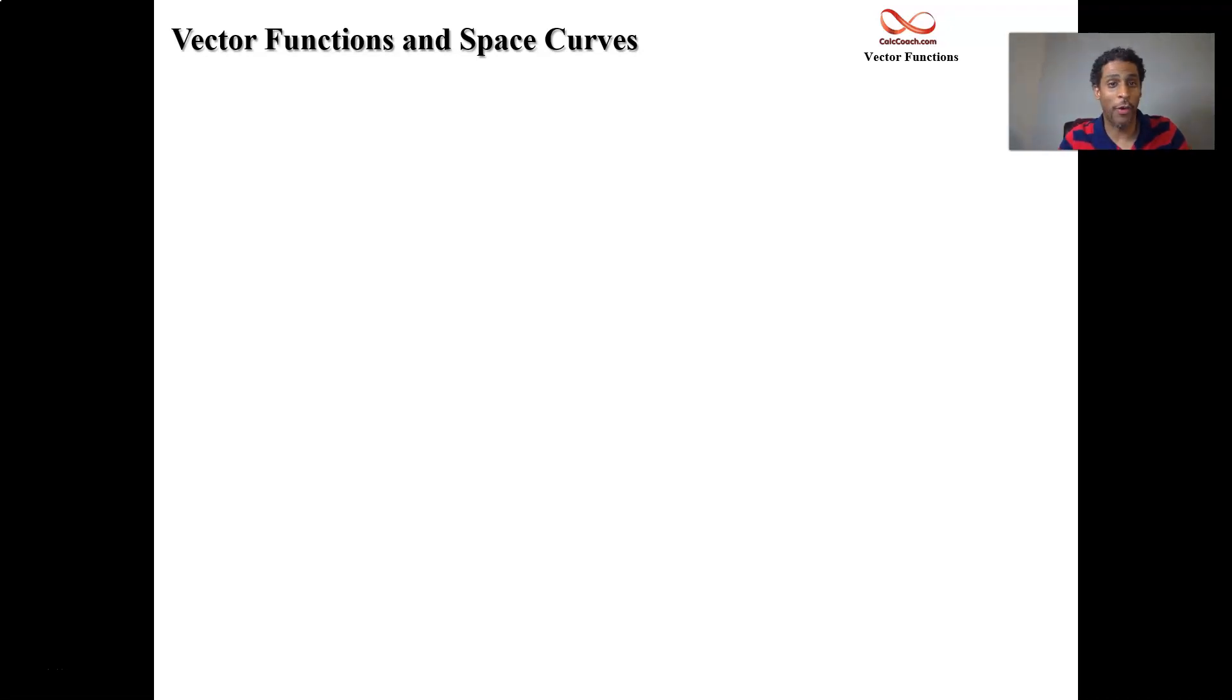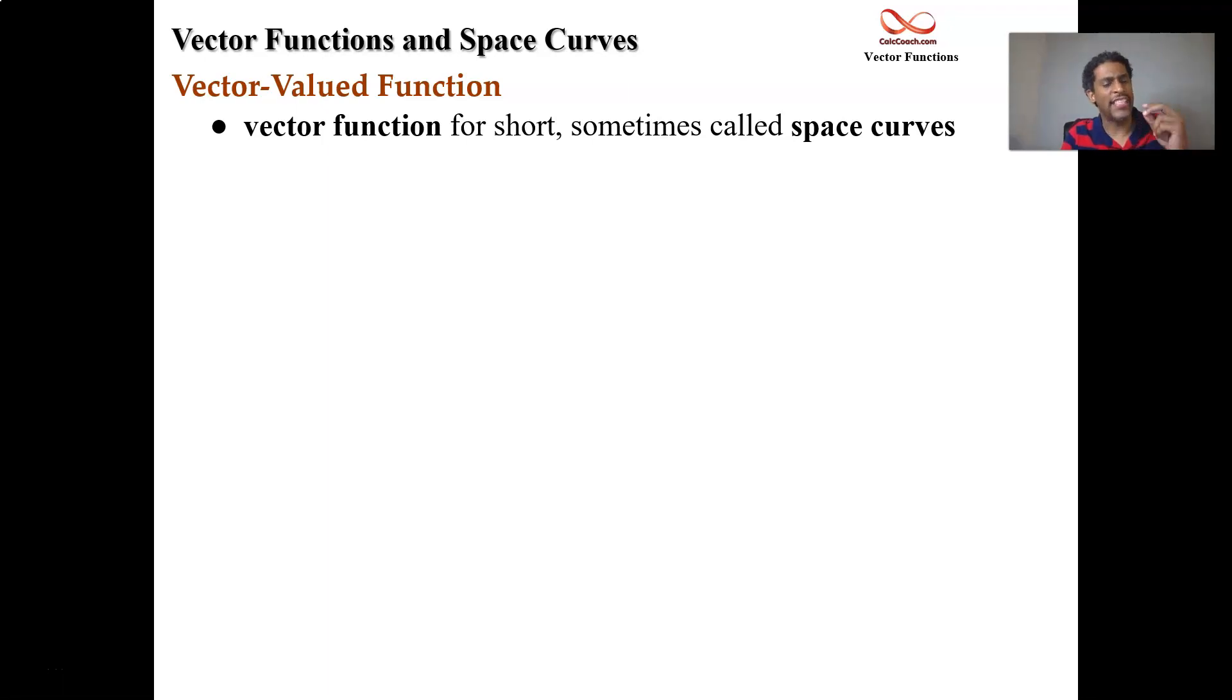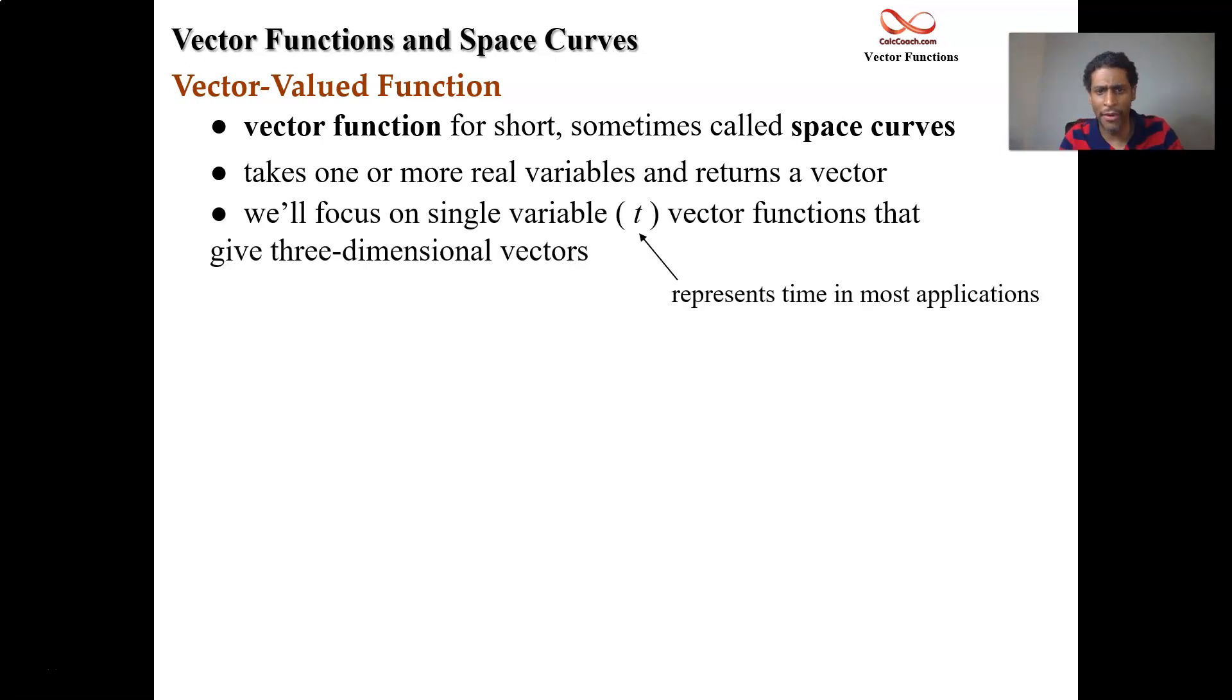Hello, welcome to this video where we look at vector functions. I like to call them space curves. We have as an input a single real variable t and the output is a vector. Think of t as a time parameter, and in each component you have a function of t: f of t in the i component, g of t in the j component, h of t in the k component.